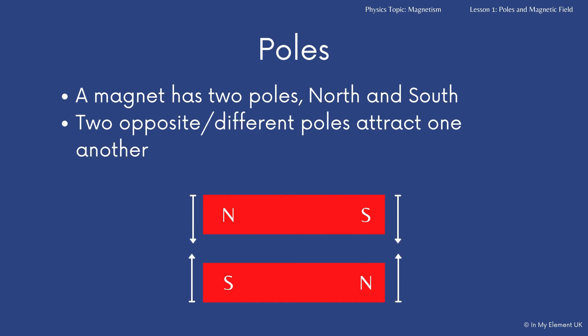Two opposite poles — two different poles — will attract to one another.